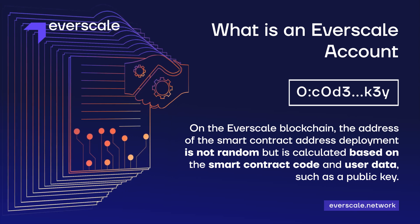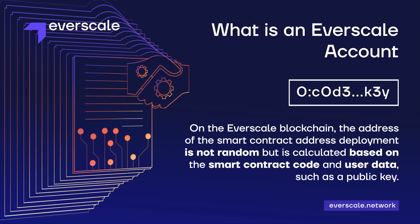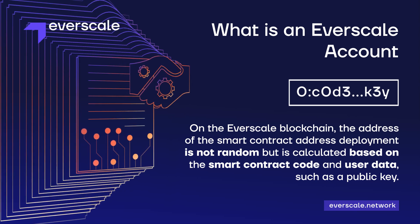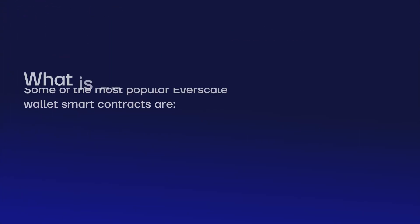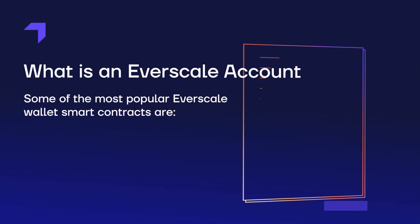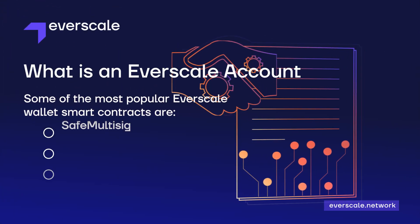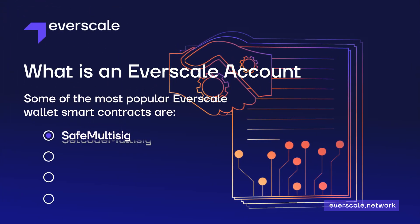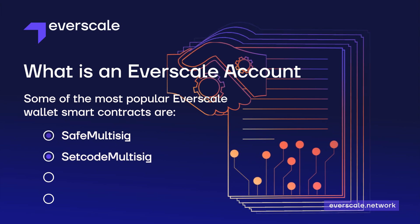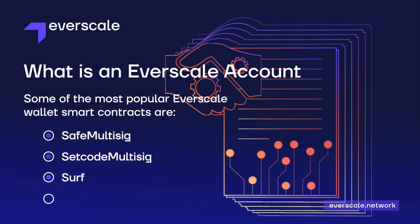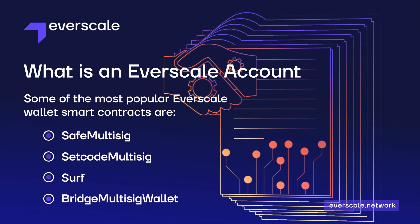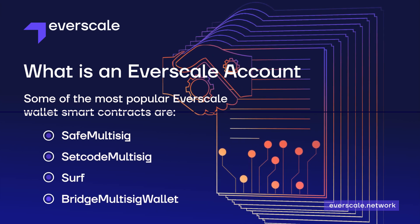Therefore, different types of wallet smart contracts have different addresses. Some of the most popular Everscale wallet smart contracts are Safe Multisig, Setcode Multisig, Surf, and Bridge Multisig Wallet.